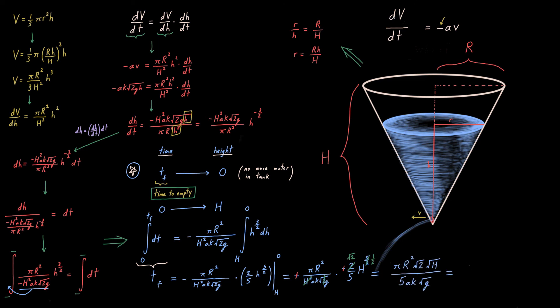So final little stretch here, pi r squared root 2 root h over 5 ak root g. You can house those square roots under one square root, and that, ladies and gents, is the time it takes for the water to completely leave this tank. We only need to know the r, h, a, and k values of our particular situation, and we'll know how long it takes for the water to empty.